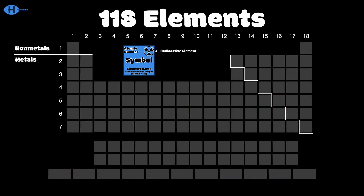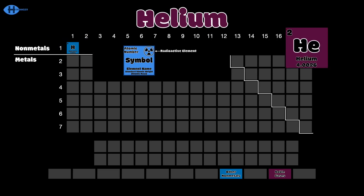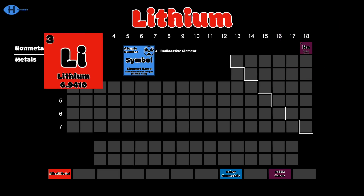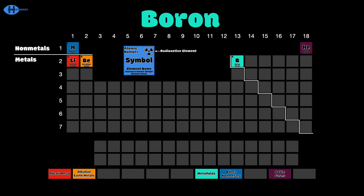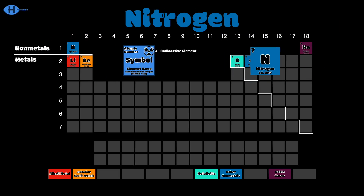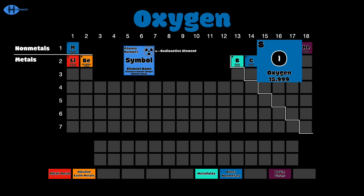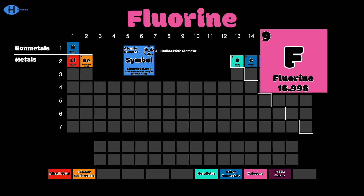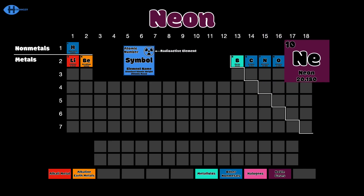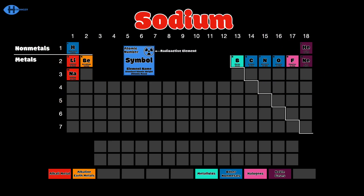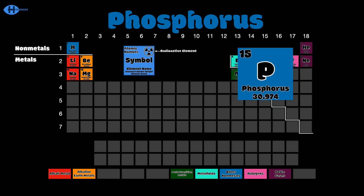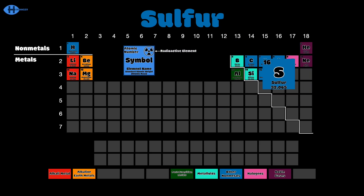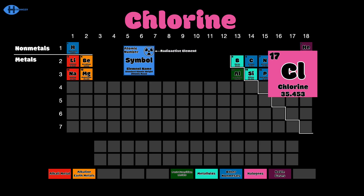Hydrogen, helium, lithium, beryllium, boron, carbon, nitrogen, oxygen, fluorine, neon, sodium, magnesium, aluminum, silicon, phosphorus, and sulfur — chlorine.